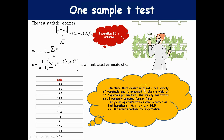For example, a vegetable expert released a new variety of vegetable expected to give a yield of 14.5 quintals per hectare. This variety was tested on two randomly selected farmers. The null hypothesis is: do the results confirm the expectation? We calculate the sample mean and standard deviation, substitute into the formula to get the test statistic, then compare it to the critical value. If greater than the tabulated value, we reject the hypothesis; if less, we accept it.